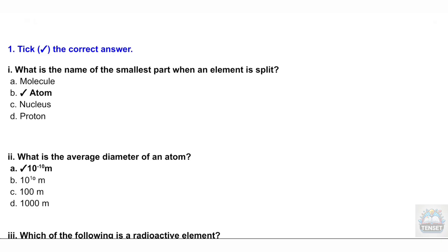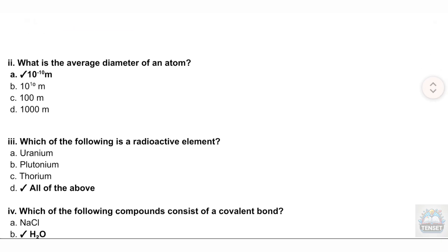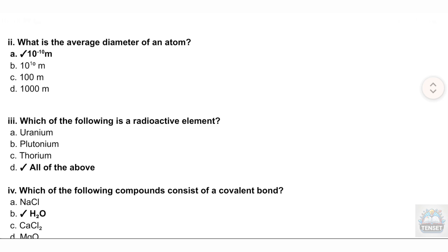Question 2: What is the average diameter of an atom? A. 10 to the power minus 10 meters, B. 10 to the power 10 meters, C. 100 meters, D. 1000 meters.